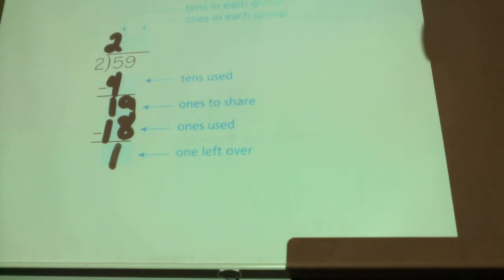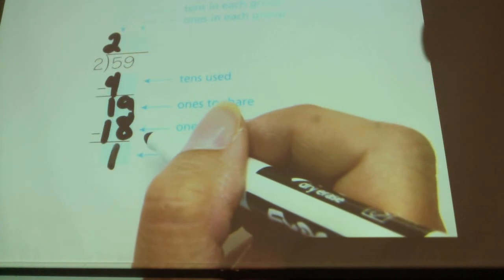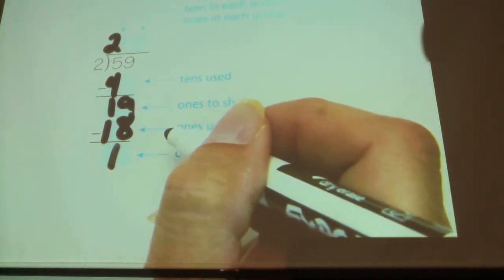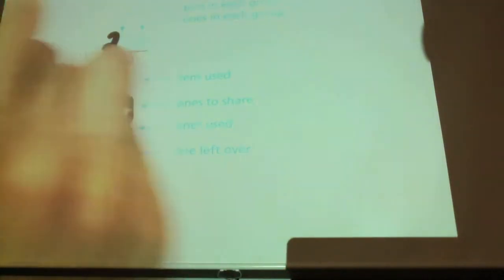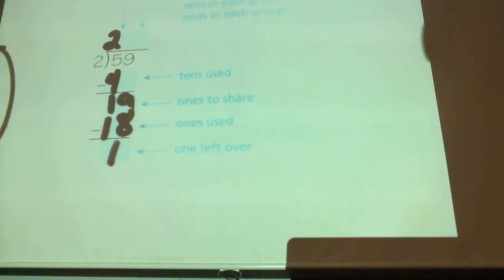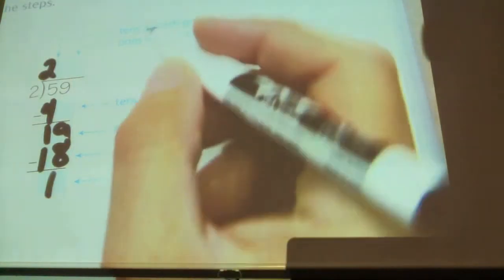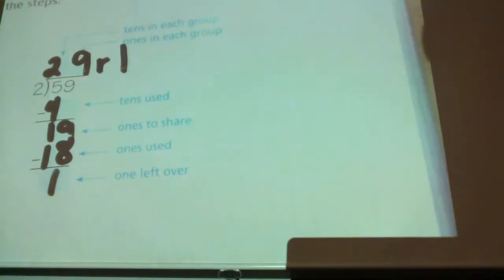How many am I going to use, class? Eighteen. I'm going to use eighteen of them. How many are going to end up in each group? Think about it. Nine. I want you to think first. Nine in each group. And then I have how many left over? One. Remainder one.